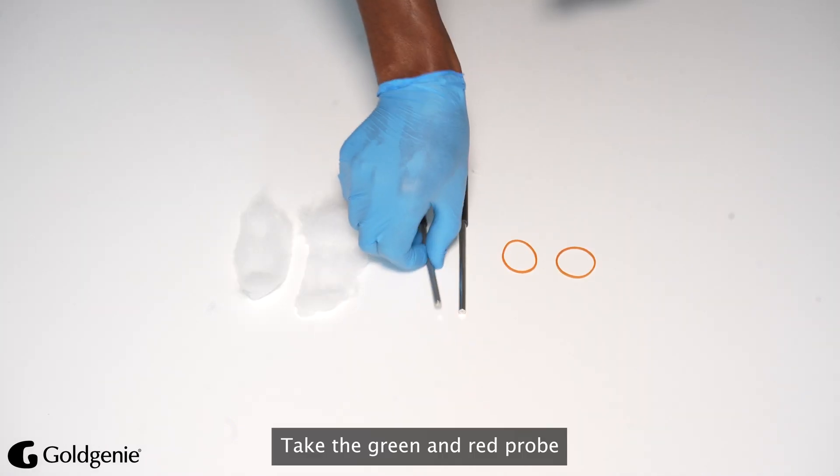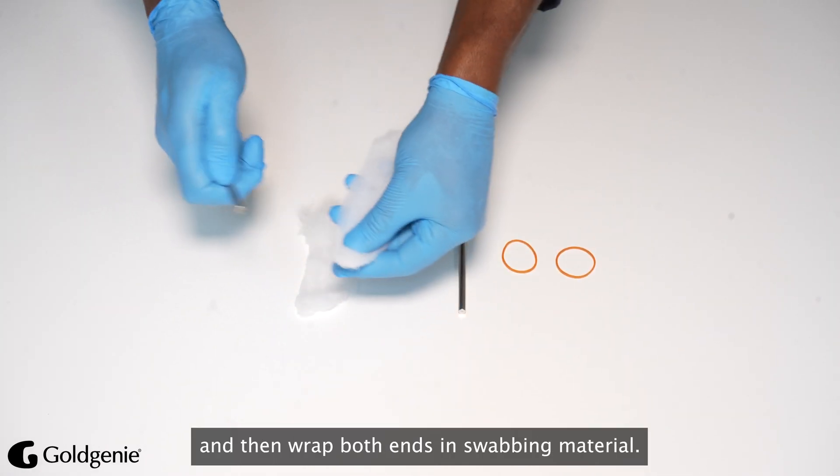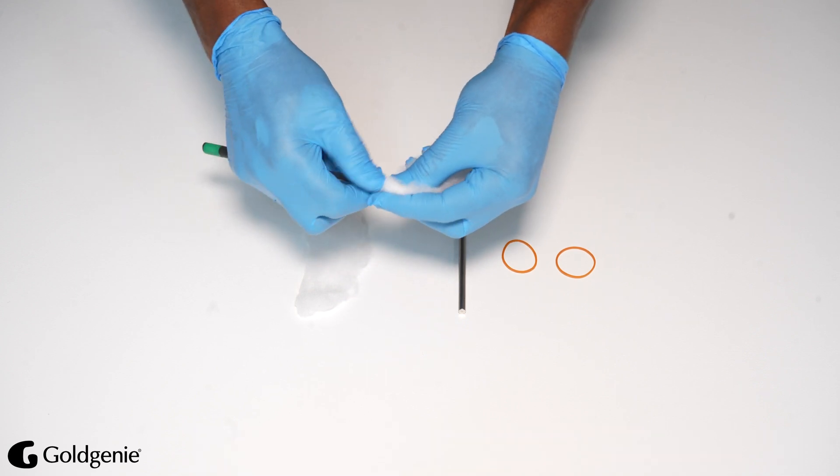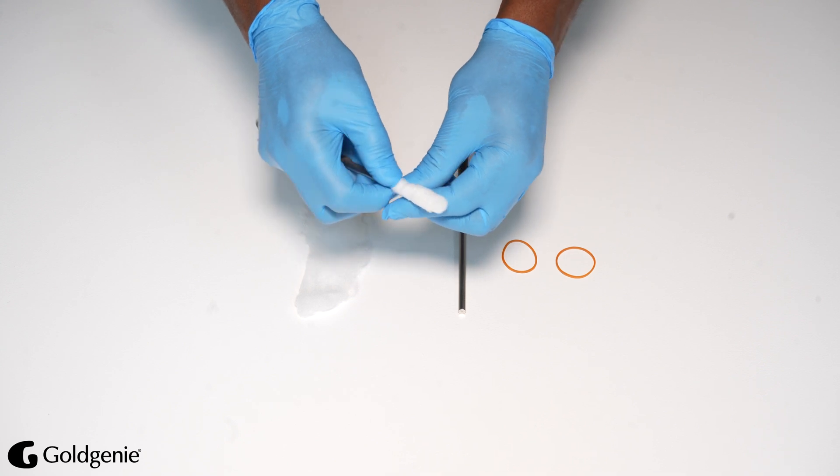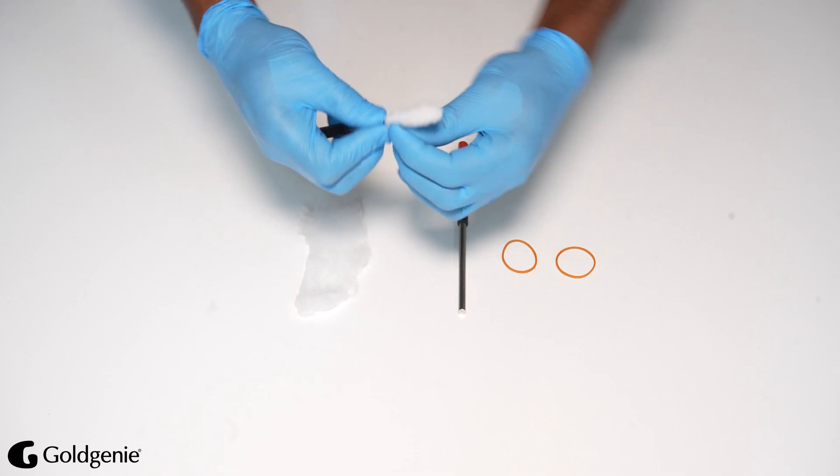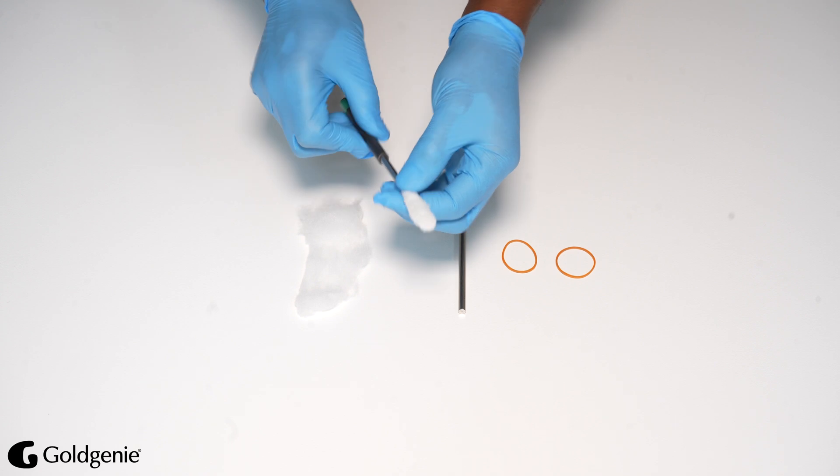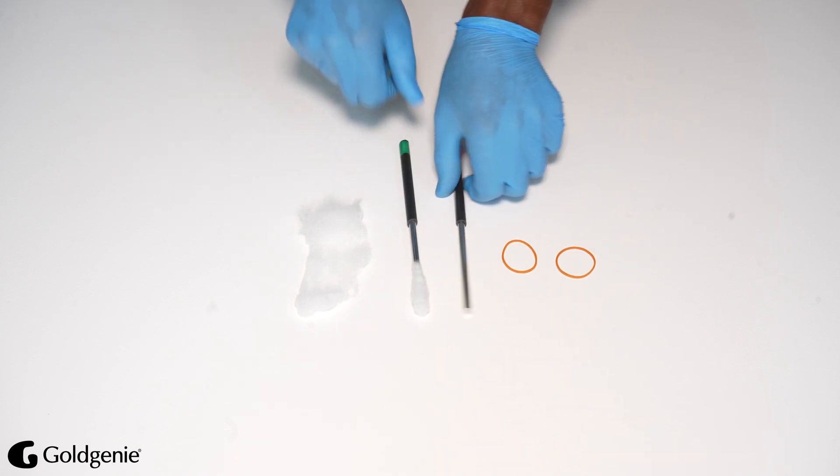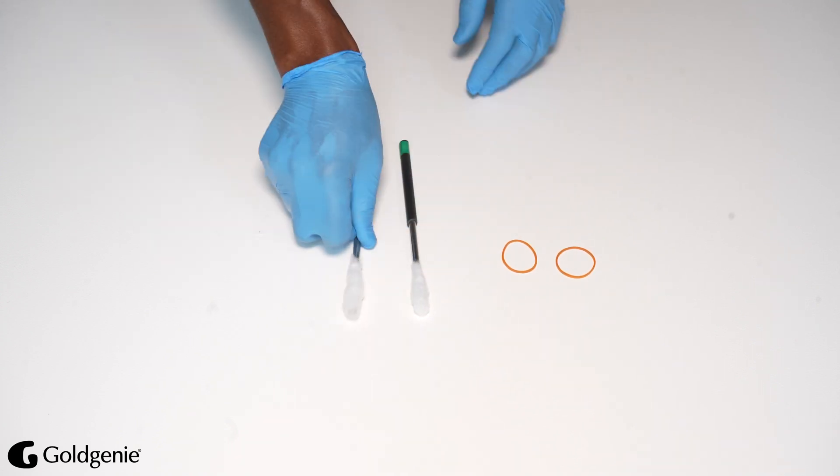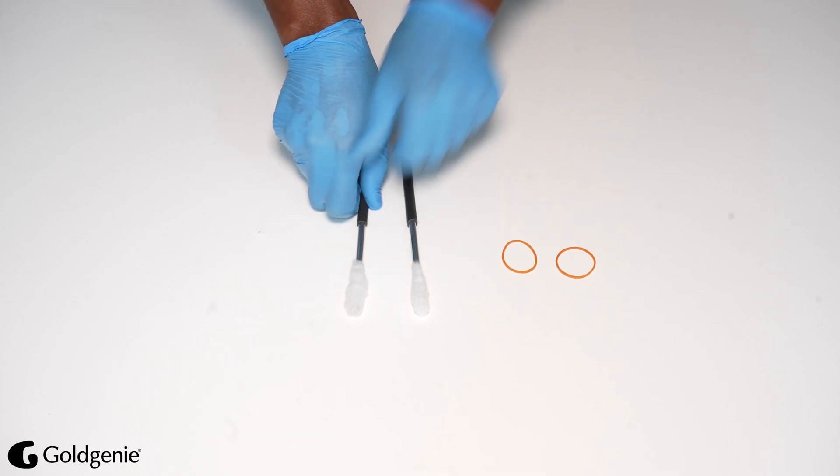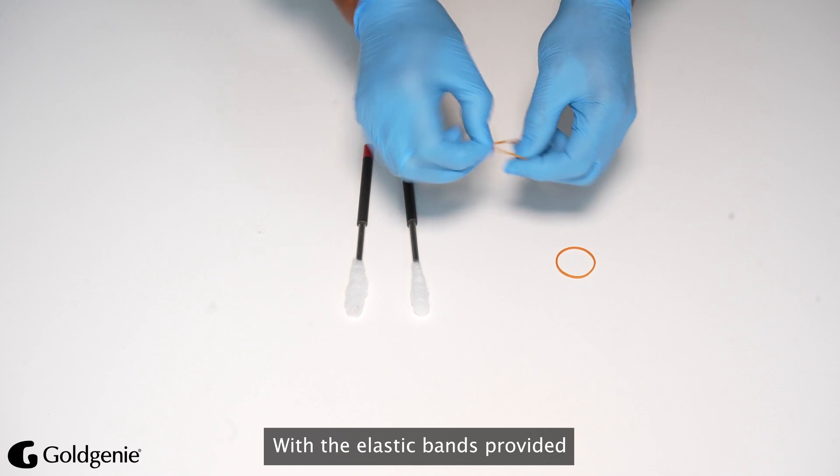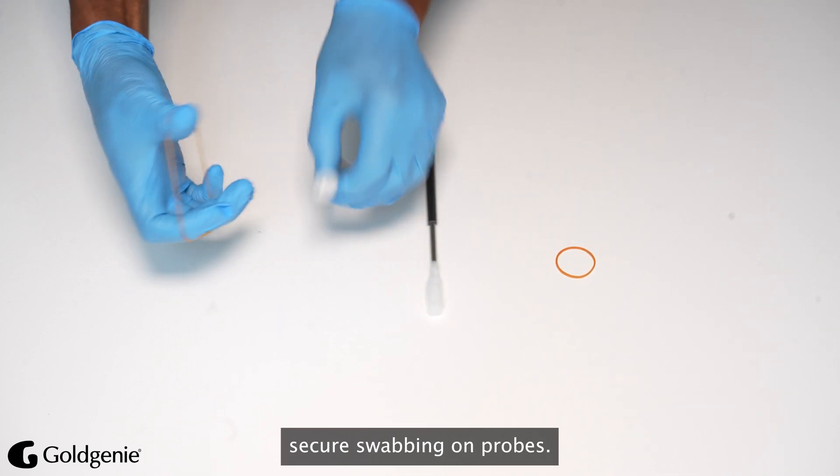Take the Green and Red Probe and then wrap both ends in swabbing material. With the elastic bands provided, secure the swabbing on the probes.